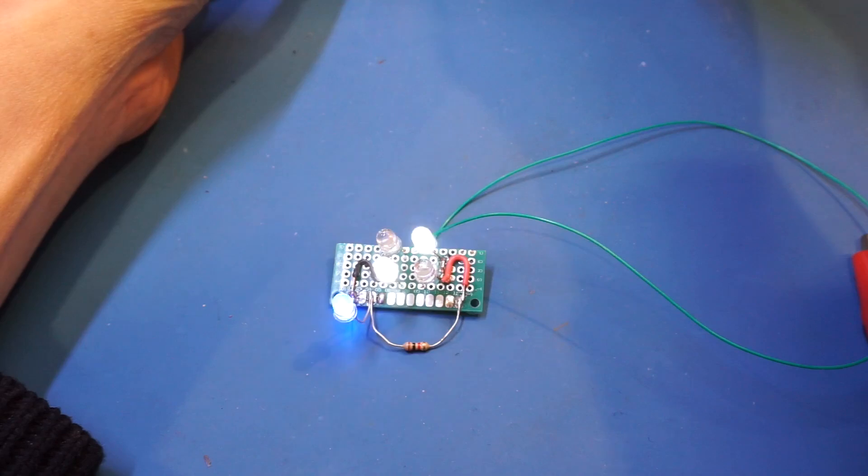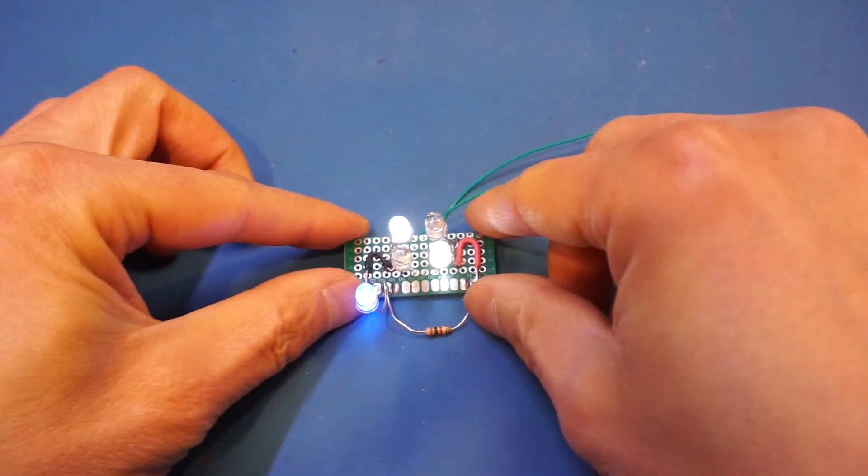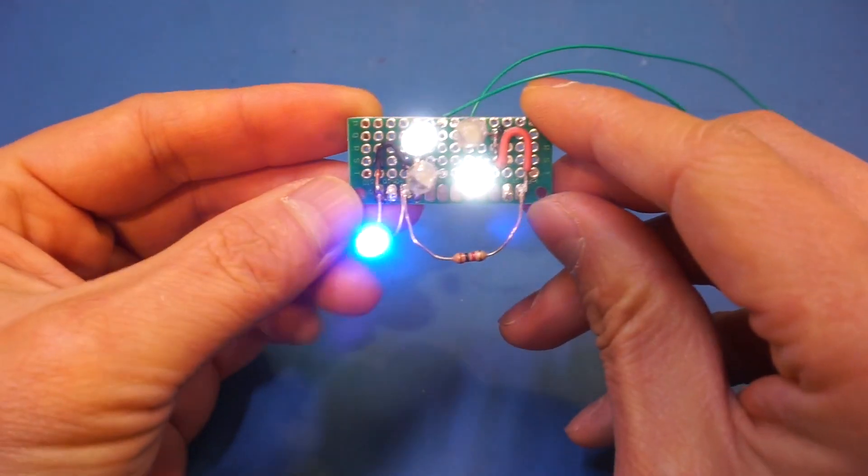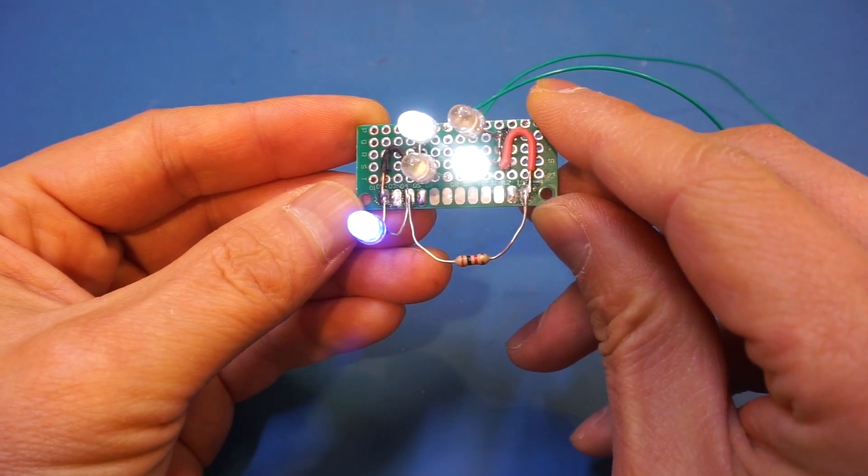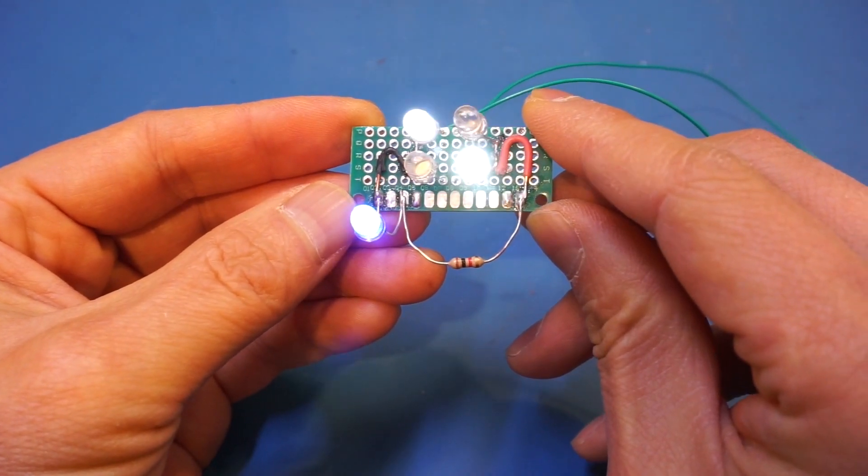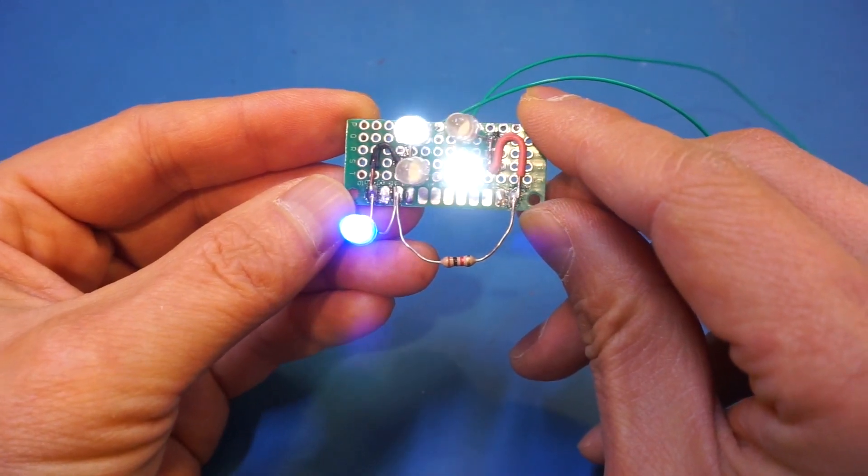So as you can see, the output LED stays lit and no filtering cap is required. This is because when the square wave is being rectified, the output is essentially a DC voltage without any ripple.